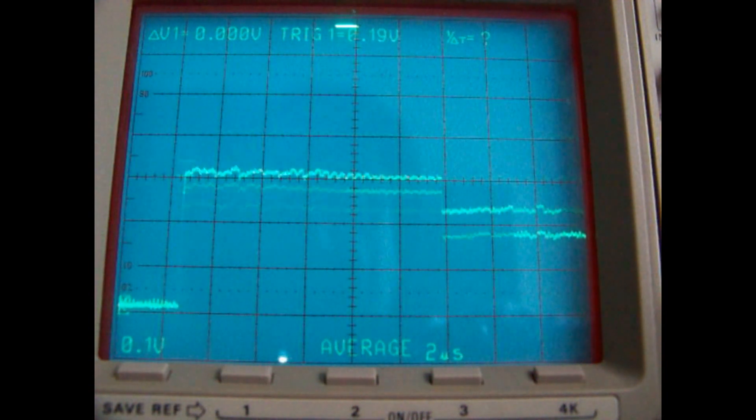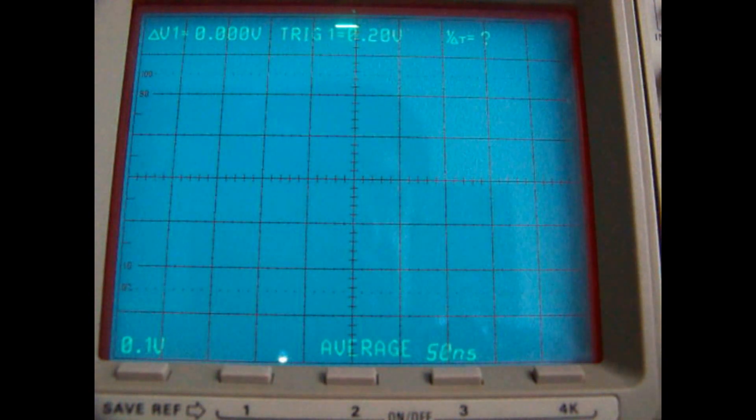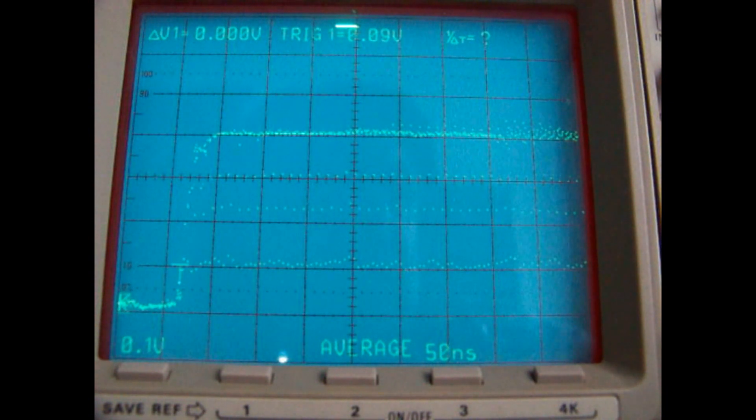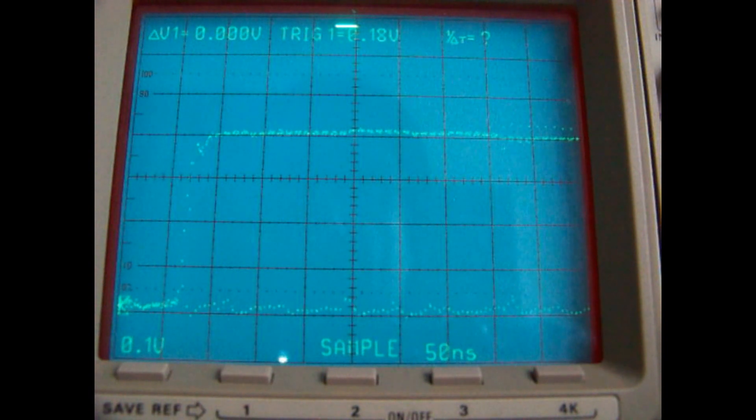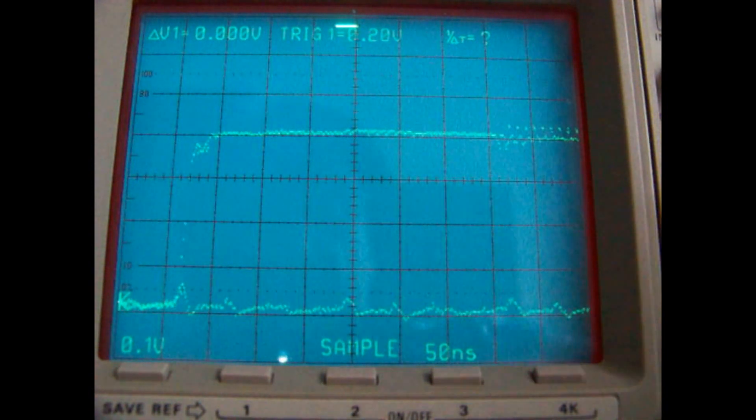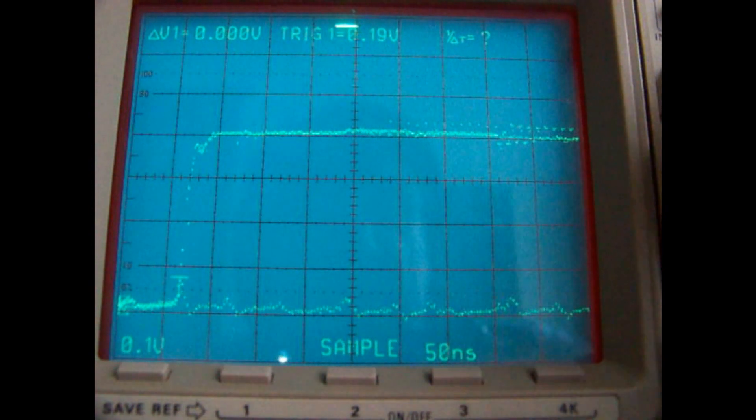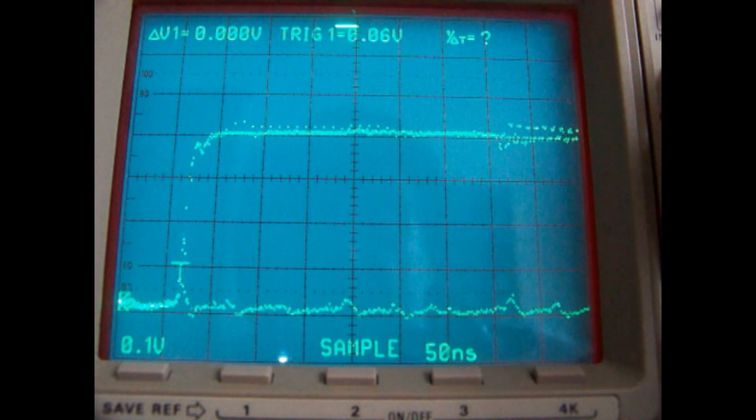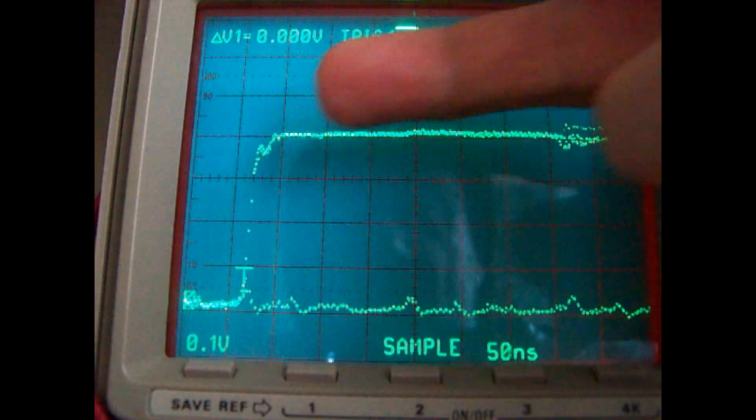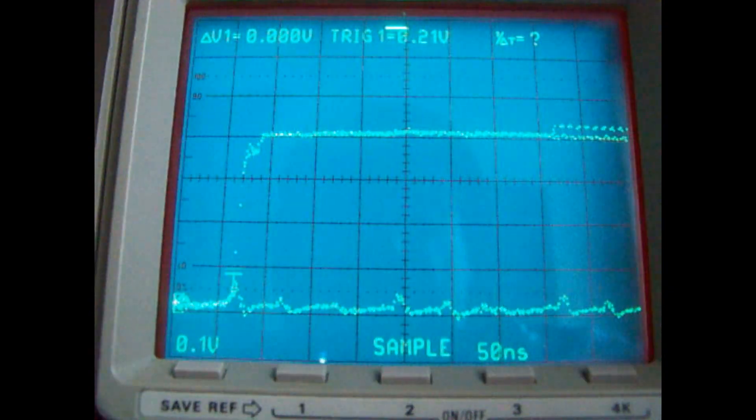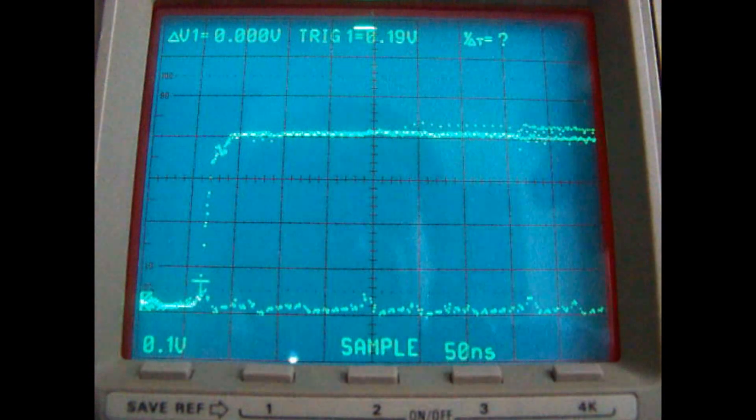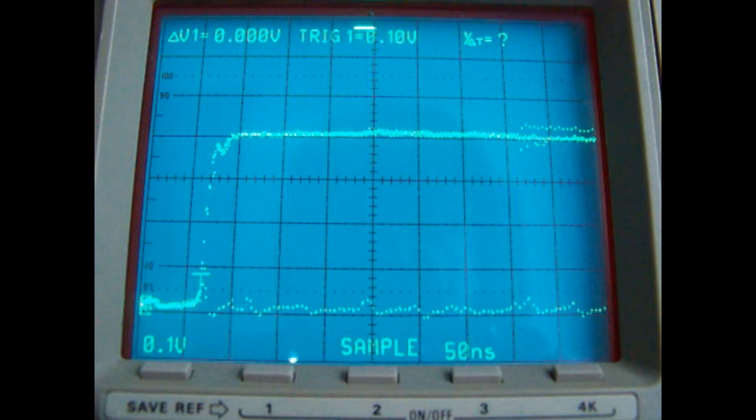So I increase the sweep time in my scope, going to the maximum. I switch from average to sample mode. Okay, and you can see that the rise time is very, very fast. We are at 50 nanoseconds per division, so the sweep time is very fast.